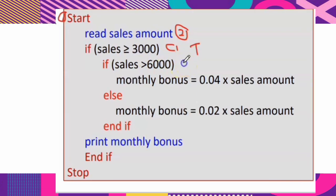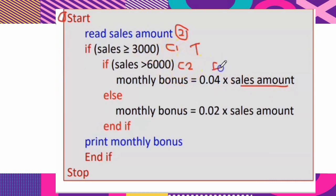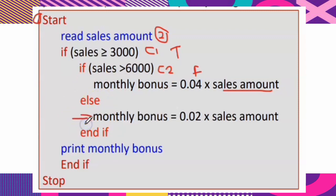The inner condition is: IF sales greater than 6,000. If sales are more than 6,000, Barwini receives a 4% bonus; otherwise she receives a 2% bonus. So if the first condition is true and the second condition is also true: monthly bonus equals 0.04 multiplied by sales amount. If the first condition is true but the second condition is false, the computer executes the second statement: monthly bonus equals 0.02 multiplied by sales amount. Write END IF to terminate the inner IF block, then PRINT monthly bonus, then write END IF to terminate the outer IF block.